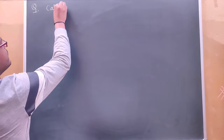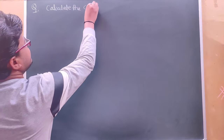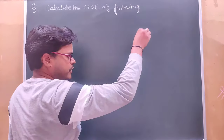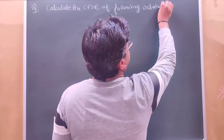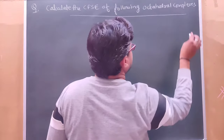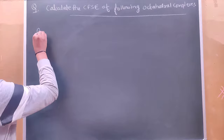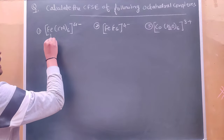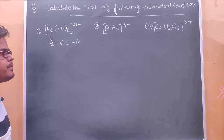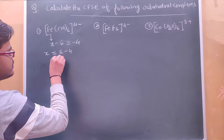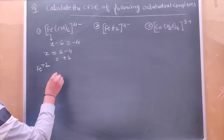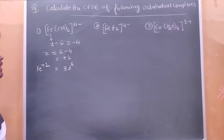Calculate the CFAC of the following octahedral complex. पहला काम होता है कि आप इसका oxidation state बताएं। x - 6 = -4, तो x = 6 - 4 = +2. Iron की इस state में हुआ iron +2 में हुआ। जैसे iron आपको +2 में पता चला, आप इसका electronic configuration लिखें: 3d6 होगा। और यहां coordination number 6 से पता चल रहा है कि geometry octahedral है।